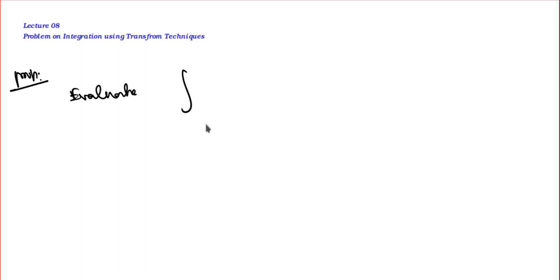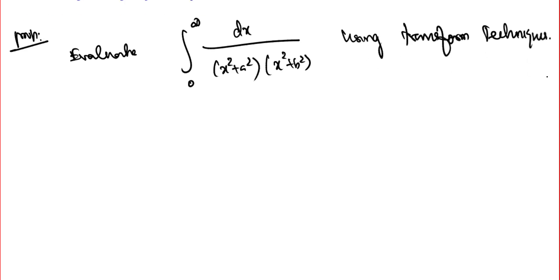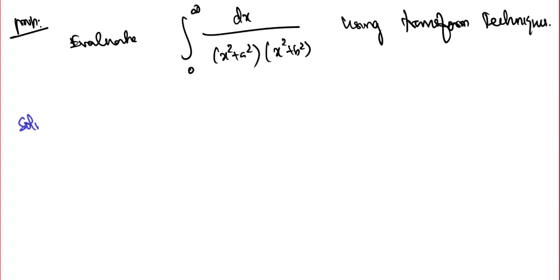In this video, we will use Fourier transform techniques to solve problems on integration. Specifically, we want to evaluate the definite integral from 0 to infinity of dx divided by (x² + a²)(x² + b²) using transform techniques.